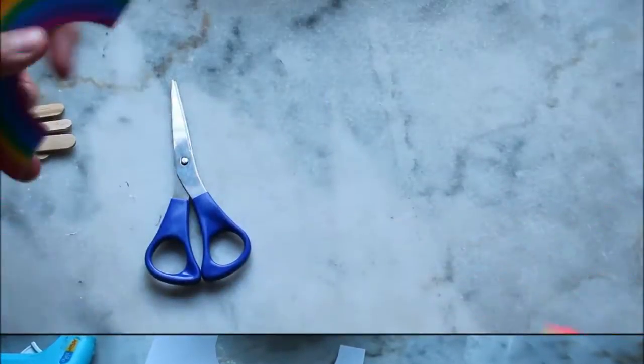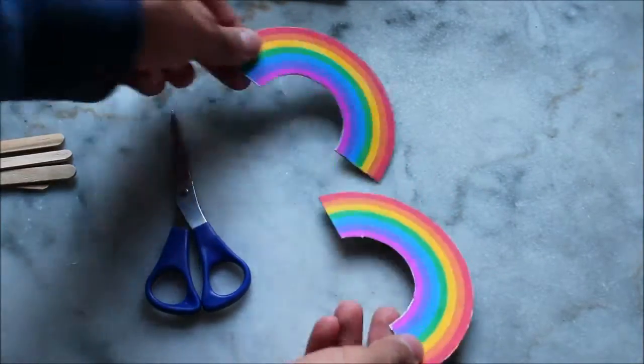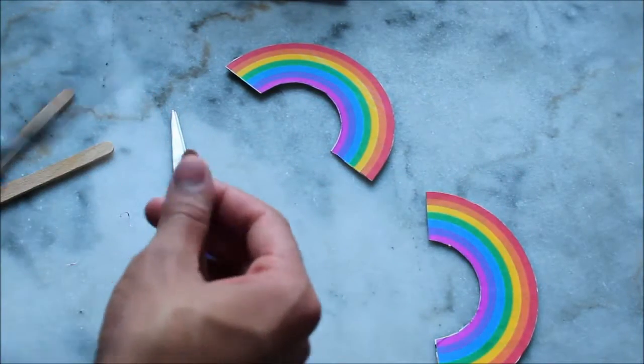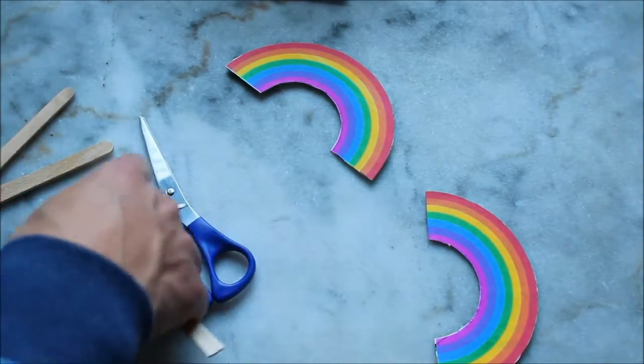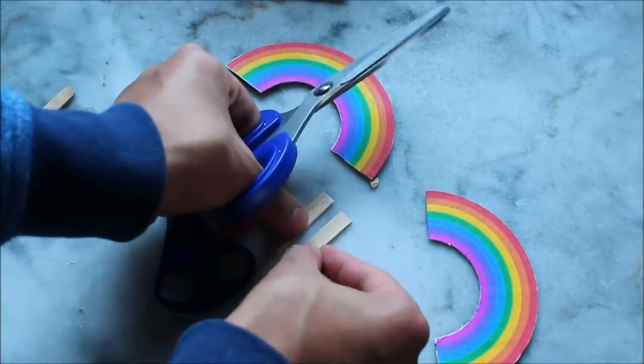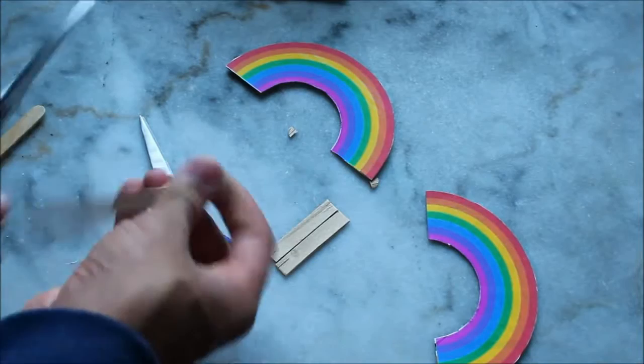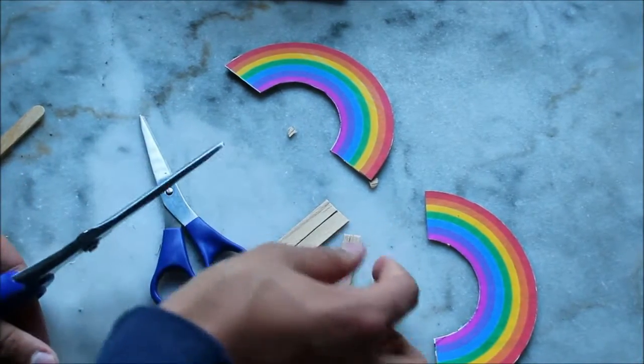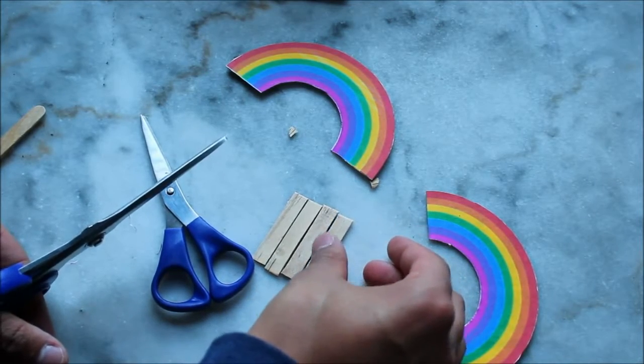Now we're going to be cutting the popsicle sticks that will be glued on the inside to act as the steps. Measure your popsicle sticks - I used one with the ends cut off and cut it in half, which was a perfect length for my mice. Keep making as many sticks as you need to accommodate the width of your pet rodent.